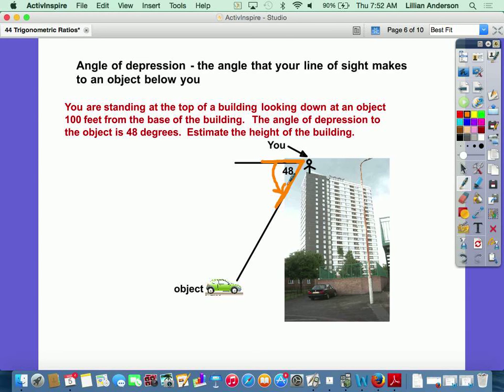Now if the man's standing at the top of the building and looking at an object that's 100 feet away from the base of the building, and his angle of depression is 48 degrees, we need to figure out how tall is this building. There's your right angle and that's what you're looking for.